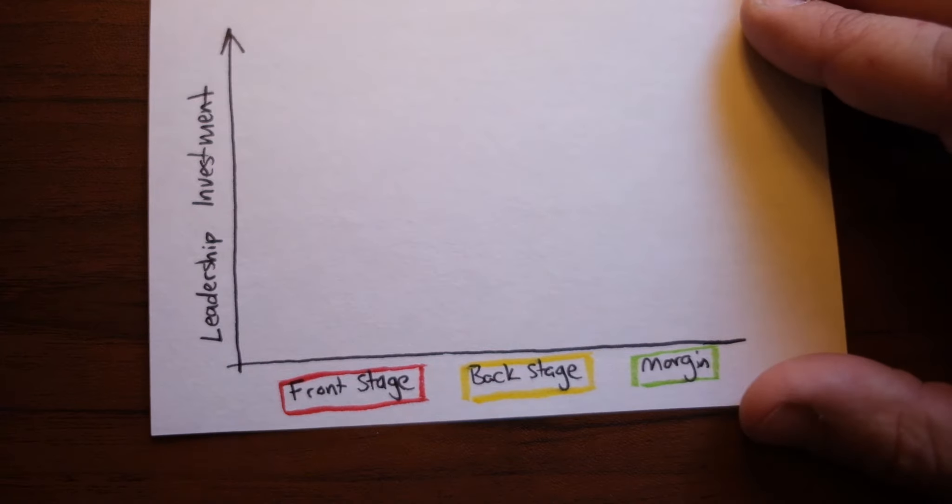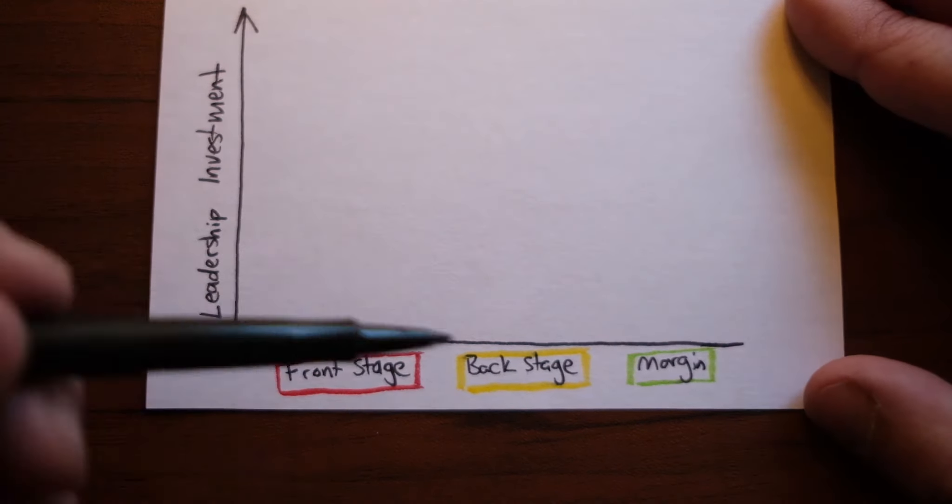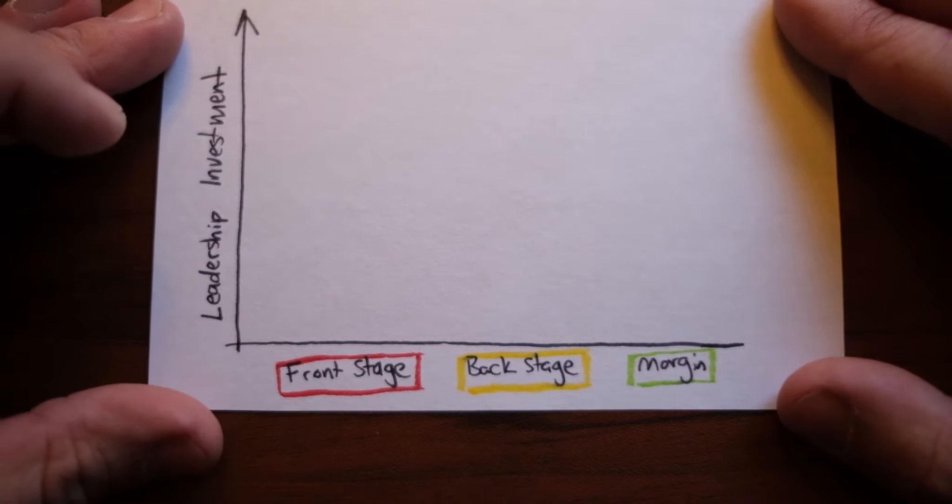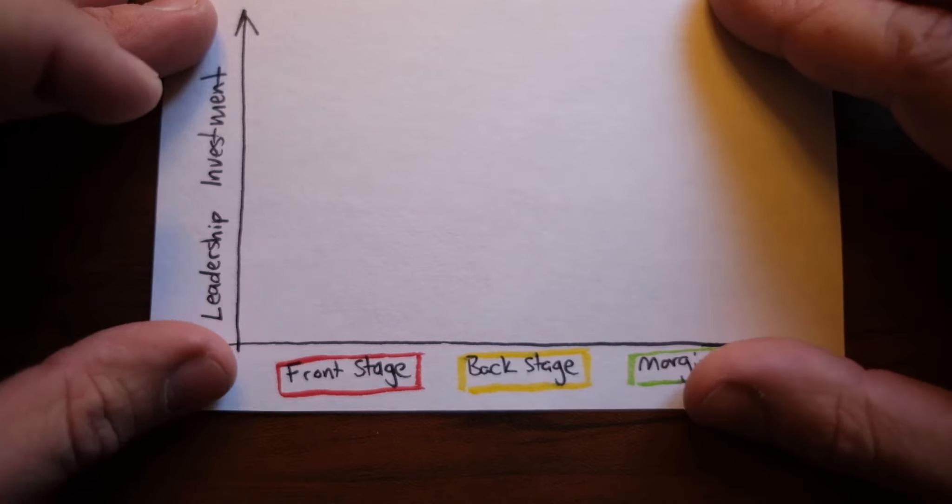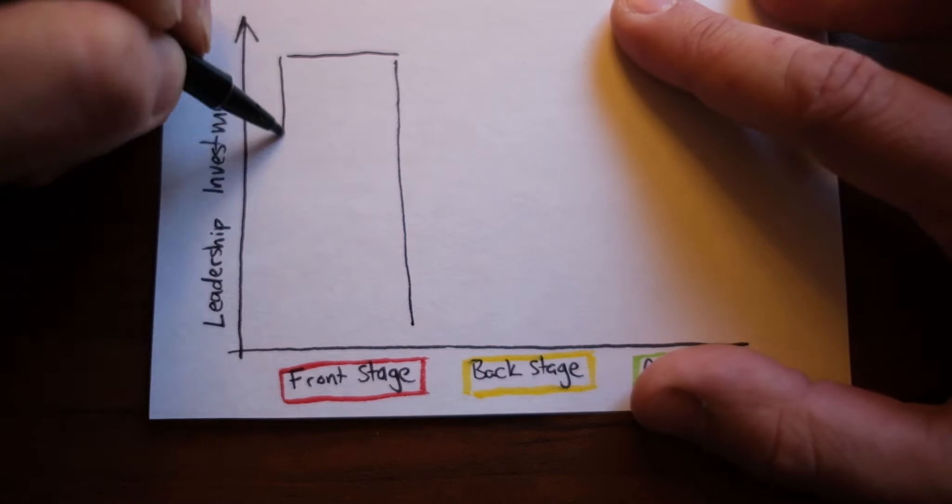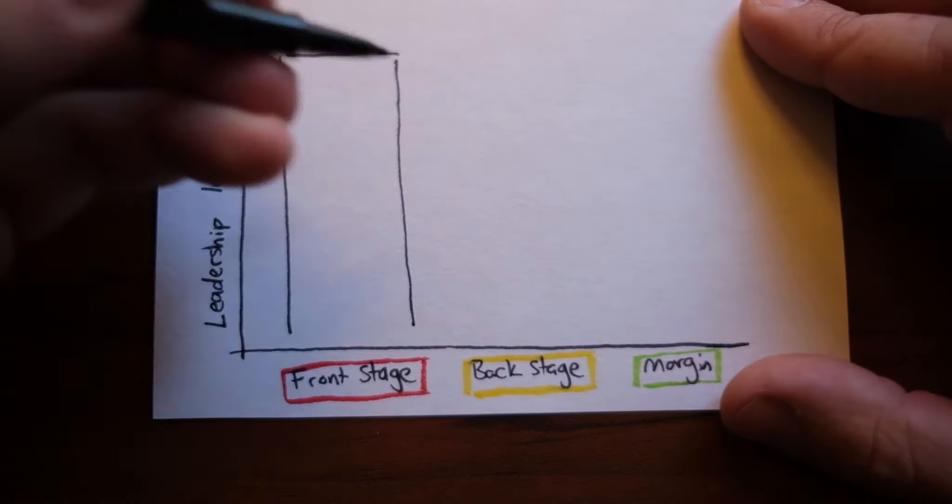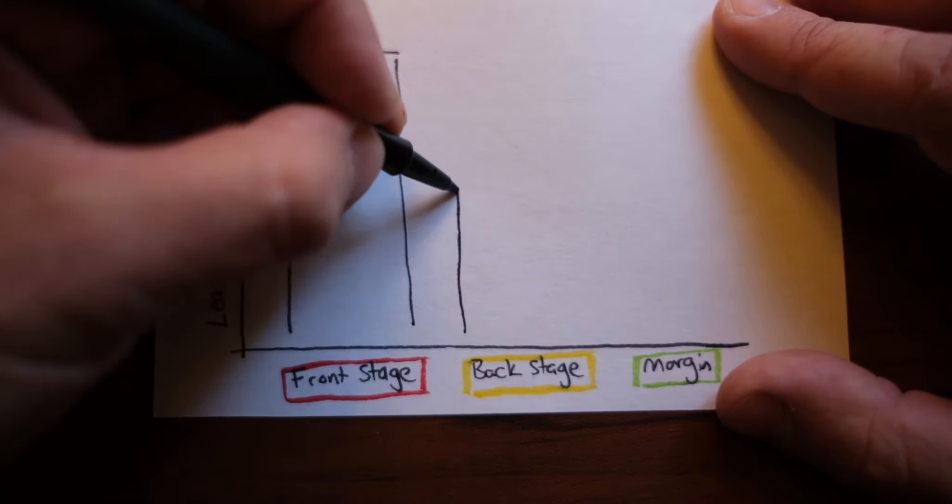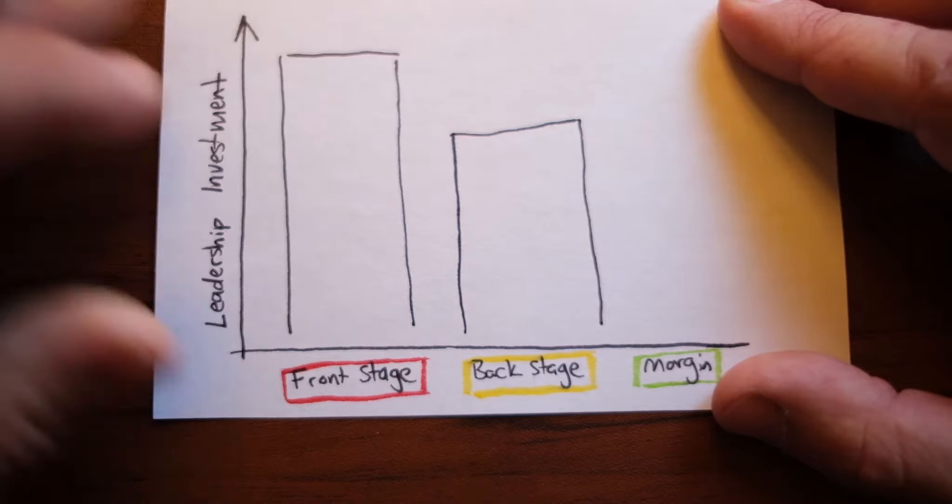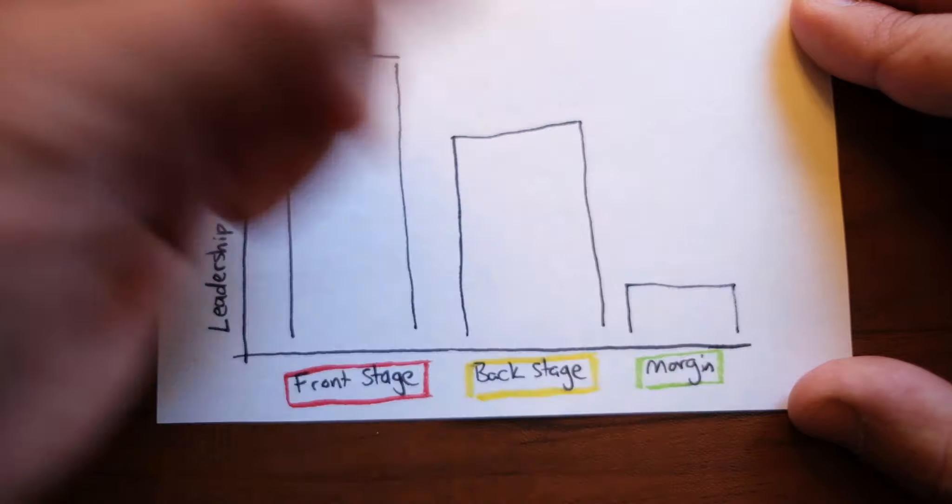So now this is what we have noticed. So the x-axis is all of the three spaces and the y-axis is how much we've seen leadership invest in each space. Now, a lot of investment goes into the front stage. Quite a lot, usually. And then a smaller yet considerable portion goes towards the back stage. And what we've also noticed, unfortunately, is that almost none goes into margin.